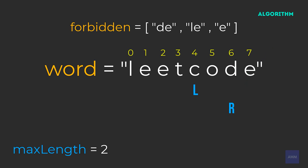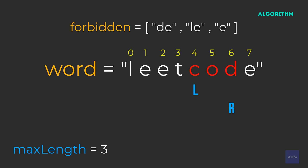Now our left pointer decreases again. Our new substring is character C. C is valid, but it's not greater than our current max length. Moving forward, our new substring is CO — CO is valid, and it's the same length as max length. Moving forward again, our new substring is COD. COD is valid. Right minus left plus one equals three, so our max length changes to three.